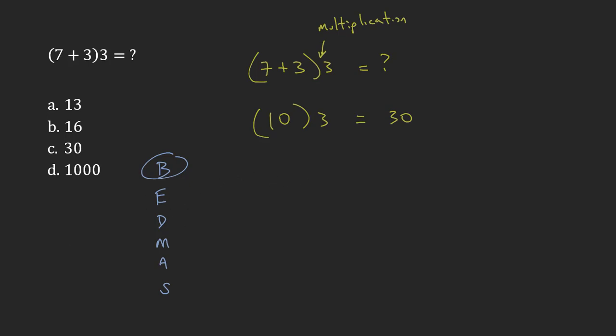We had no exponents, no division. We do the multiplication next. 10 times 3 is 30 and so my answer is C.